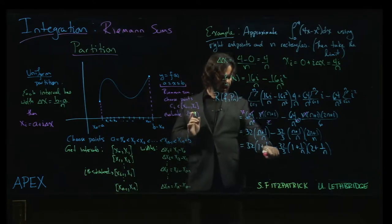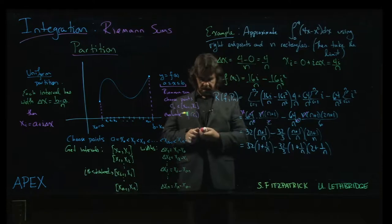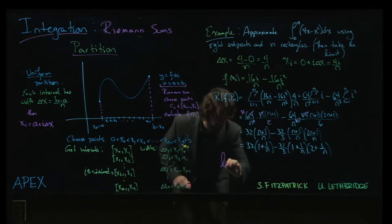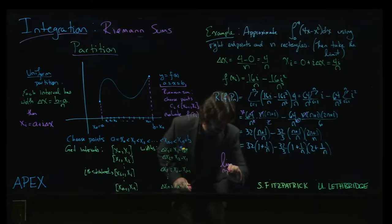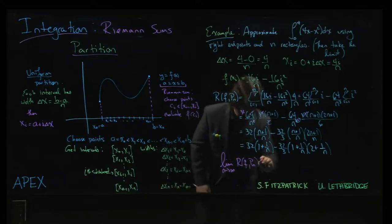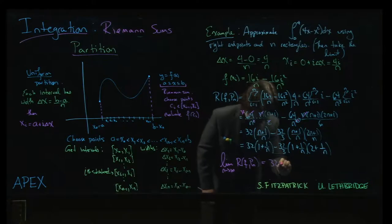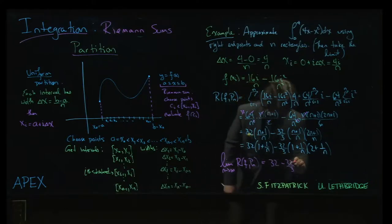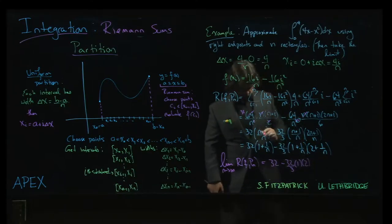And so we can actually see what's going to happen if we let n go to infinity. If n goes to infinity, these error terms are actually going to go away. And what we get is this. We get that the limit as n goes to infinity of this Riemann's sum is just going to be 32 times 1, 32 over 3 times 1 times 2.